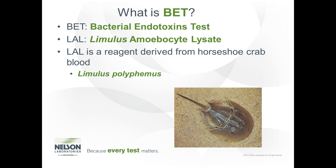So what is BET? BET is the bacterial endotoxin test. It utilizes a reagent that is derived from horseshoe crab blood. Previously it was known as the Limulus amoebasate lysate test. However, when the United States Pharmacopeia and the Japanese Pharmacopeia were harmonized, they changed it to the BET test because there is a different species of horseshoe crab that is used in Asia.